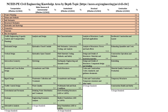The NCEES civil engineering PE exam has traditionally been a breadth and depth type of exam. The most important thing is this changes starting in April 2024. I'll talk about what the exam currently looks like and then how it's going to change in April 2024.